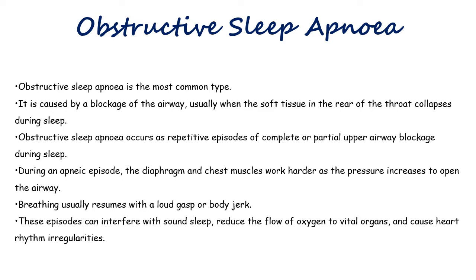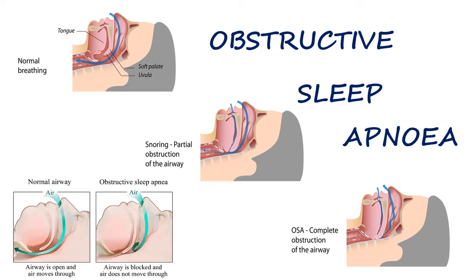Obstructive sleep apnea occurs as repetitive episodes of complete or partial upper airway blockage during sleep. During an apnea episode, the diaphragm and chest muscles work harder as the pressure increases to open the airway. Breathing usually resumes with a loud gasp or body jump. These episodes can interfere with sound sleep, reduce the flow of oxygen to vital organs, and cause heart rhythm irregularities. This illustration shows normal breathing, snoring which is partial obstruction of the airway, and OSA which is complete obstruction of the airway.